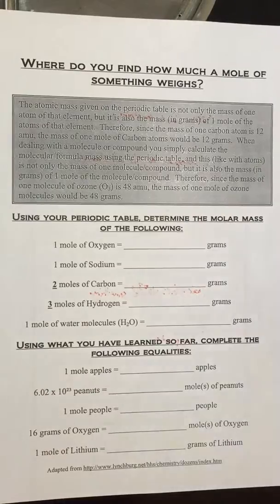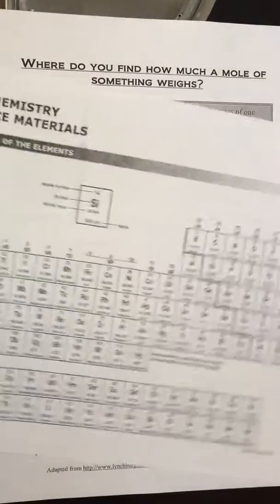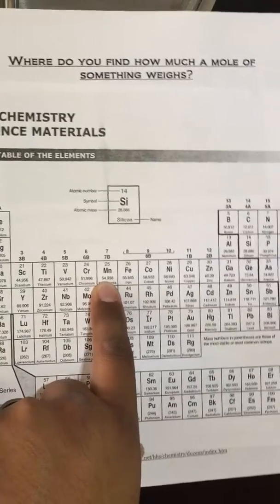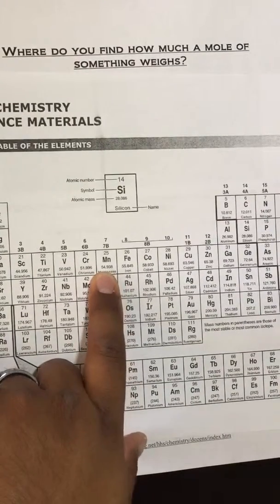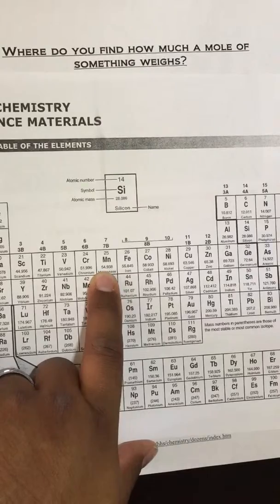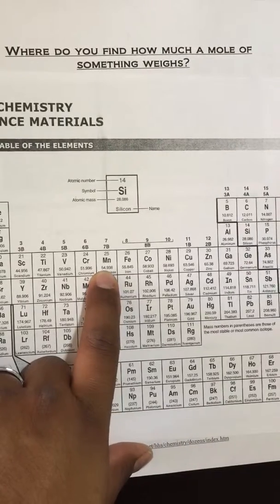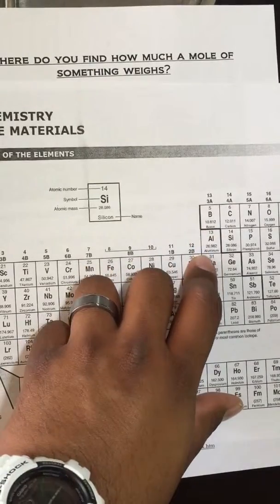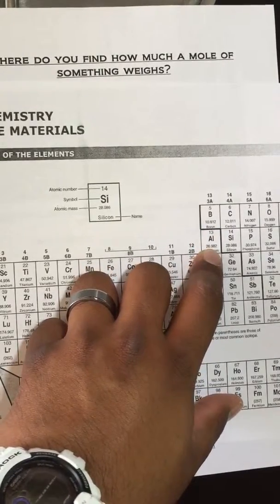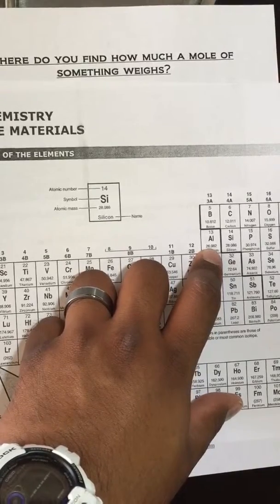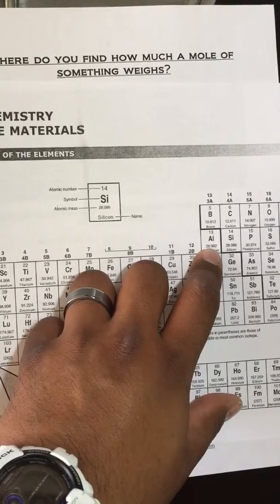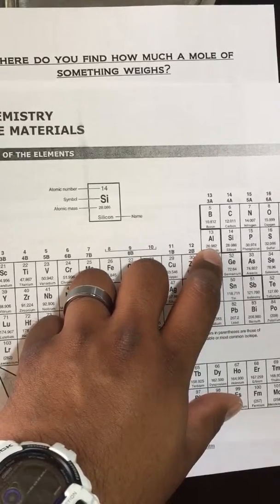If you look at the periodic table, you see this number right here at the bottom? It was the atomic mass, also known as the average atomic mass. Now it will be known as the molar mass. Because one mole — if I tell you one mole of aluminum and I ask you the question, how much does it mass or weigh? You're going to tell me that it's 26.982 grams.